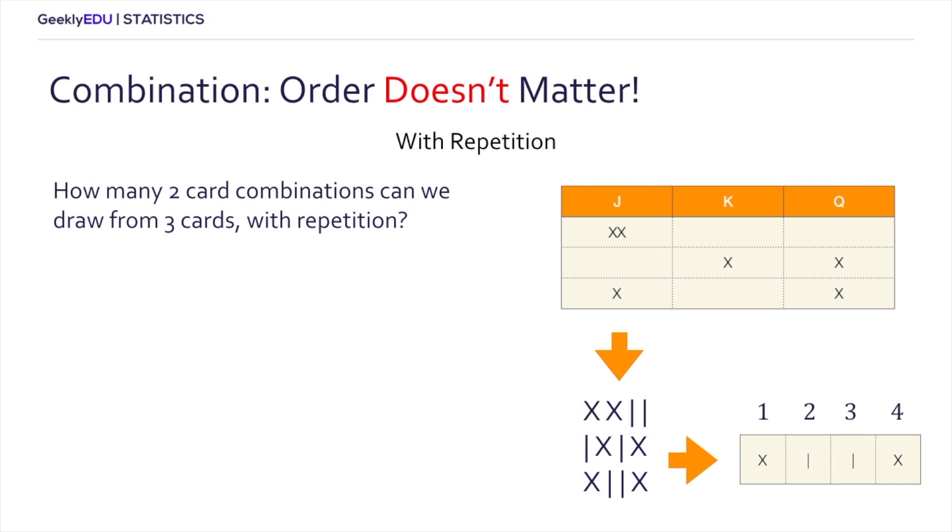So we start to see that every particular combination here corresponds to a particular combination in our original problem. So x line line x would mean that there's one jack, no king, and one queen. In essence, we just took a complicated question and asked a slightly simpler one, one that we know how to answer. And the question is, how many ways are there to arrange the x's and the lines in those four cells?